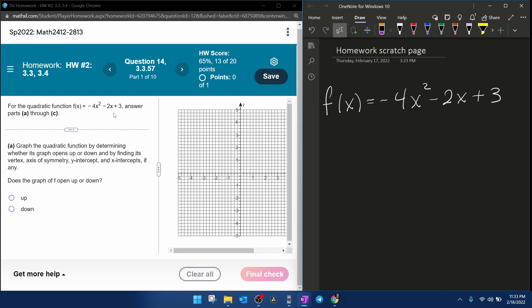for this given quadratic function, they want to know first, does the graph open up or down? That is determined by the value of a. Here we can see that a is less than zero, since it's negative, and that means the parabola will open down.